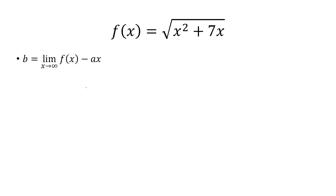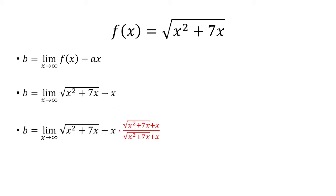And now for b, we have to subtract by ax. So, a we said was 1, so just replace a with 1 here. And now to solve this limit, we have to multiply by the conjugate. So, multiply the top and the bottom by the conjugate.